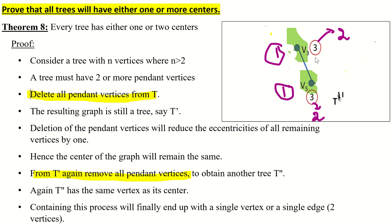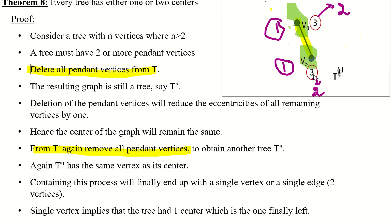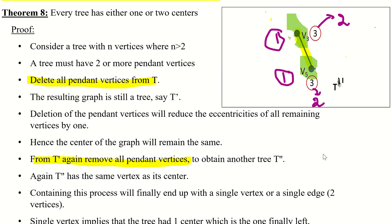The tree reduces to either one or two vertices. If it reduces to a single vertex, that is one center. If it reduces to a single edge — two vertices — that indicates the tree contains two centers. This process continues until we reach a single vertex or a single edge.